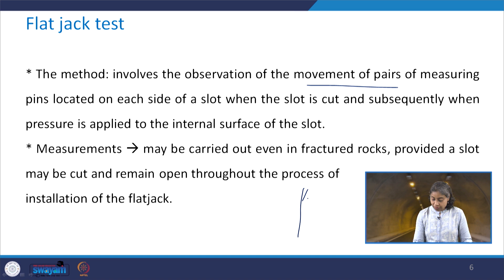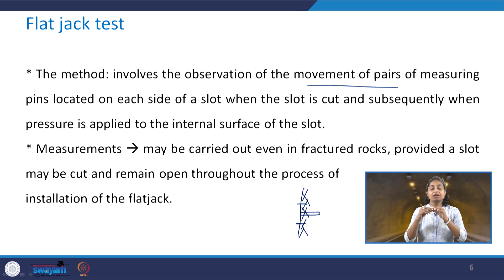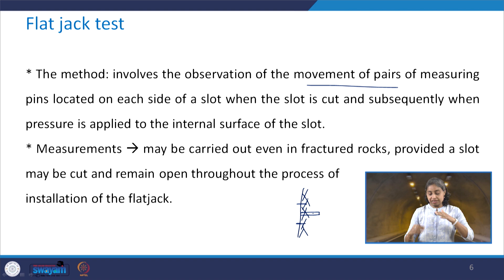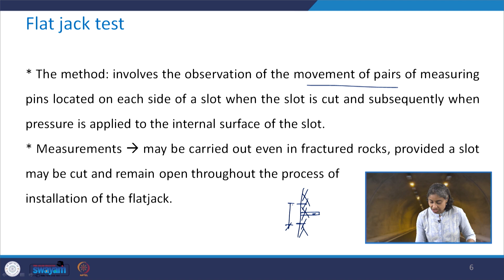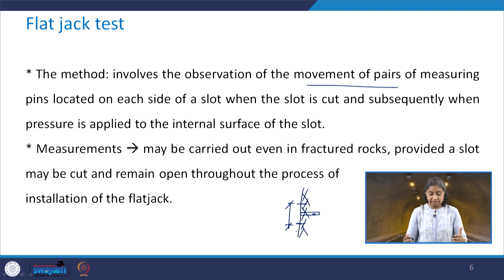Basically, consider this as the rock mass with 2 pins on either side. We cut a slot in between these pins to conduct the test. When this slot is cut, there is going to be separation creating a stress-free boundary and redistribution of stresses. We then put the flat jack in this slot. The distance between the measuring pins is already known, so the pressure required to maintain that distance is what indirectly gives us the in situ state of stress. This is the philosophy of this particular test.